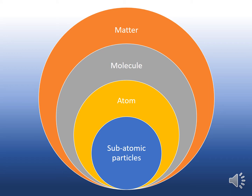This illustration shows what makes up matter. The smallest particles are the subatomic particles, like quarks. These subatomic particles bind together the different parts of an atom. The parts of an atom are electrons, neutrons, and protons. When atoms bind together, they form a molecule, and molecules form matter.